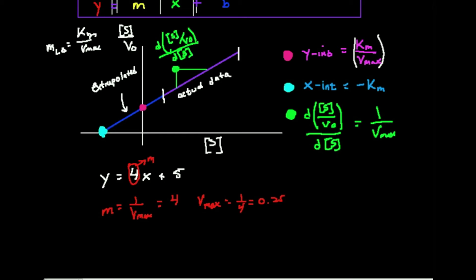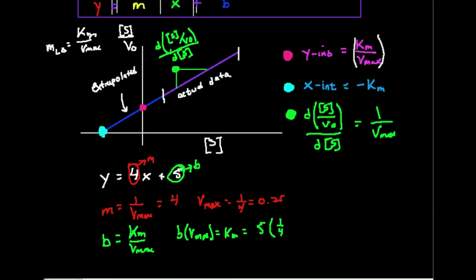We also have the Y-intercept. The Y-intercept B from our regression line equals Km over Vmax. We know B is 5, and we just found Vmax. So if we take the Y-intercept times Vmax, that equals Km. The Y-intercept is 5, and Vmax is one-fourth or 0.25, so the Km of this enzyme is five-fourths, or 1.25, with whatever molarity-type units you have.